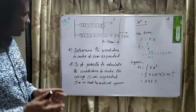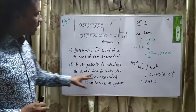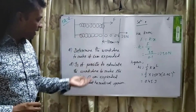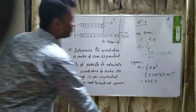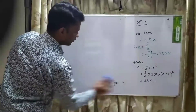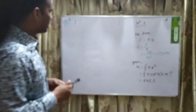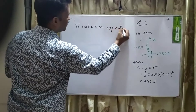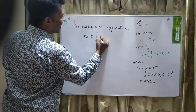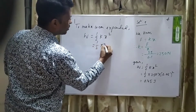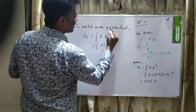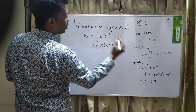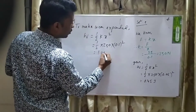Let's go to question D: is it possible to calculate the work done to make the spring 12 cm expanded? Give a mathematical answer. First, we calculate for 10 cm expansion: W1 equals half times 250 times 0.1 squared, and the value is 1.25 Joules.